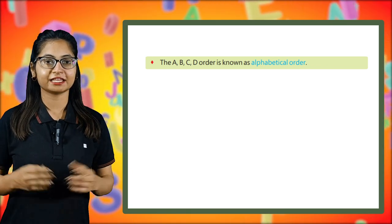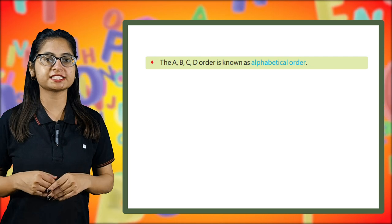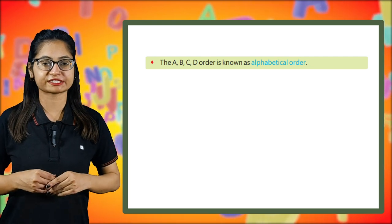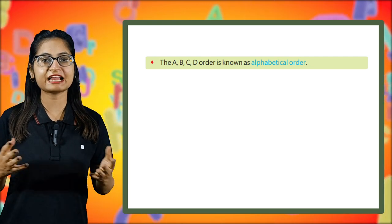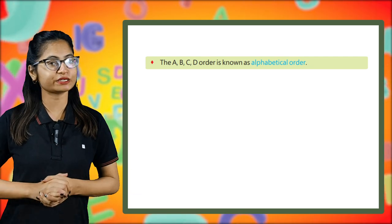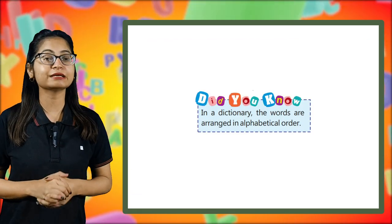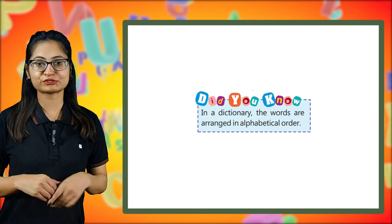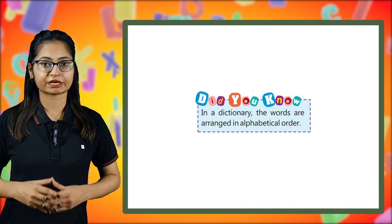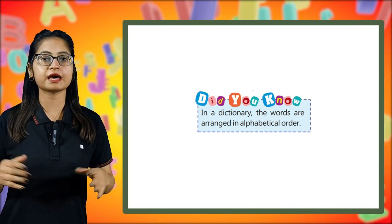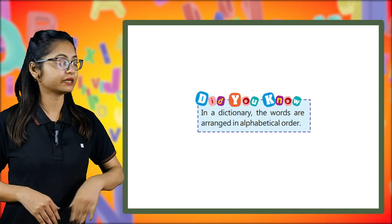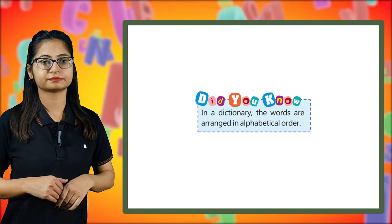Now let's learn something new. The A, B, C, D order is known as alphabetical order. In a dictionary, the words are arranged in alphabetical order.